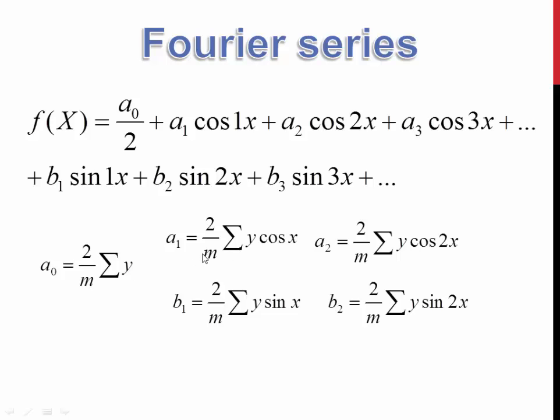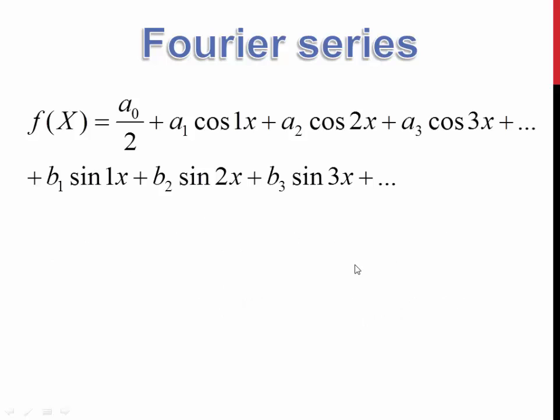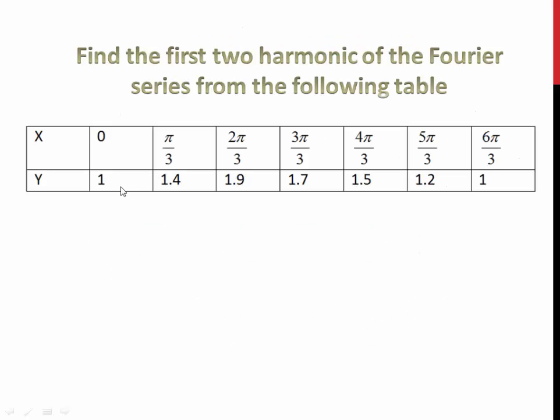So here M stands for the terms. When you see this table column, how many terms are here? 1, 2, 3, 4, 5 and 6. You exclude this last term because the Y value is repeated. So we have only 1, 2, 3, 4, 5 and 6 terms.